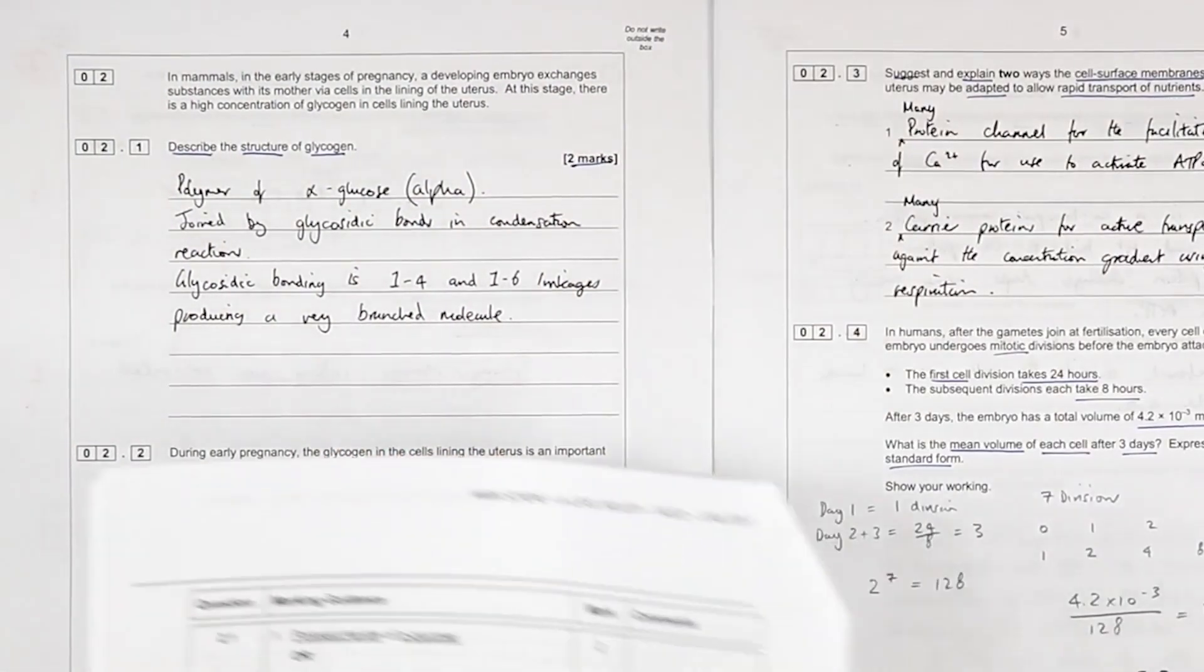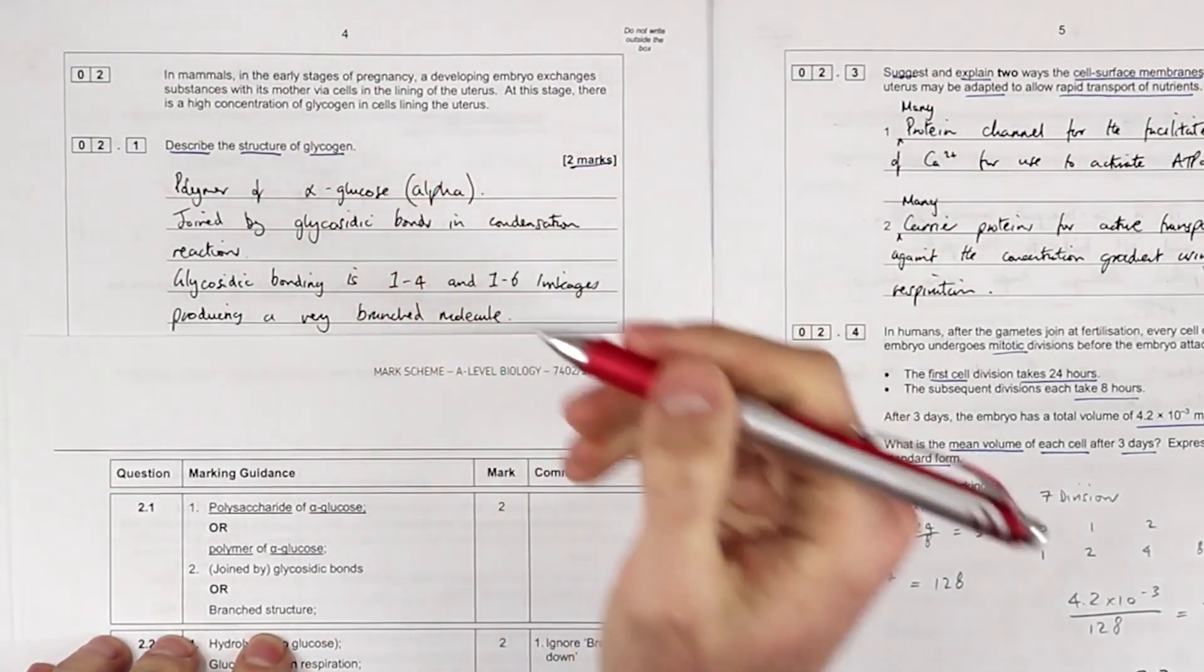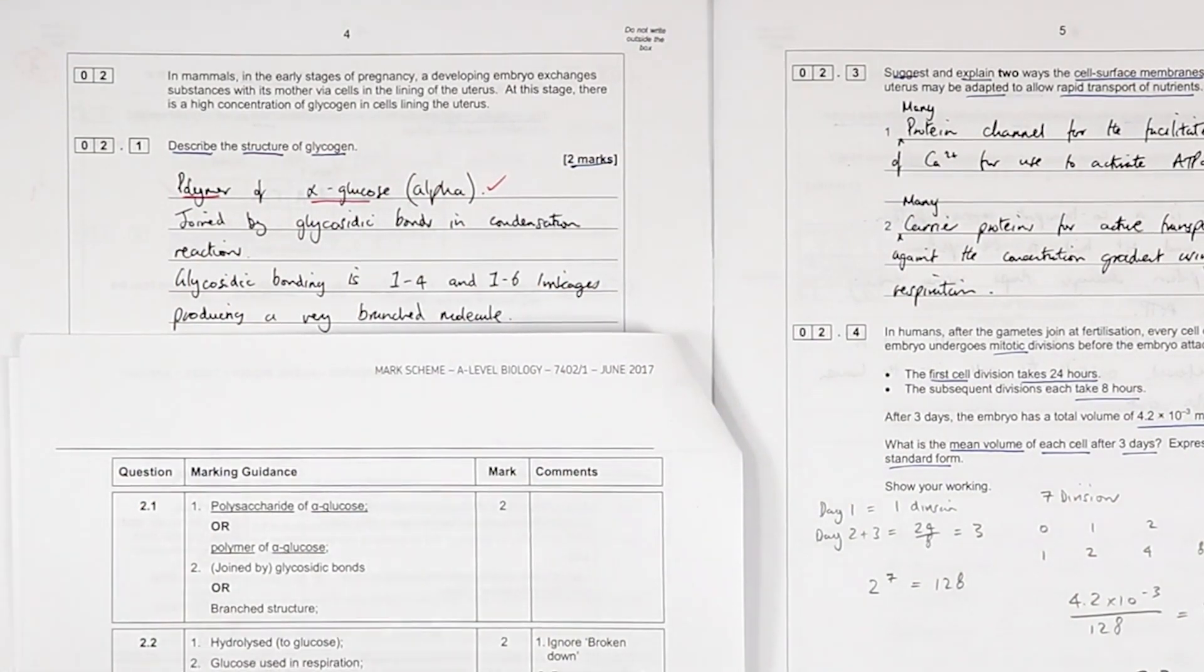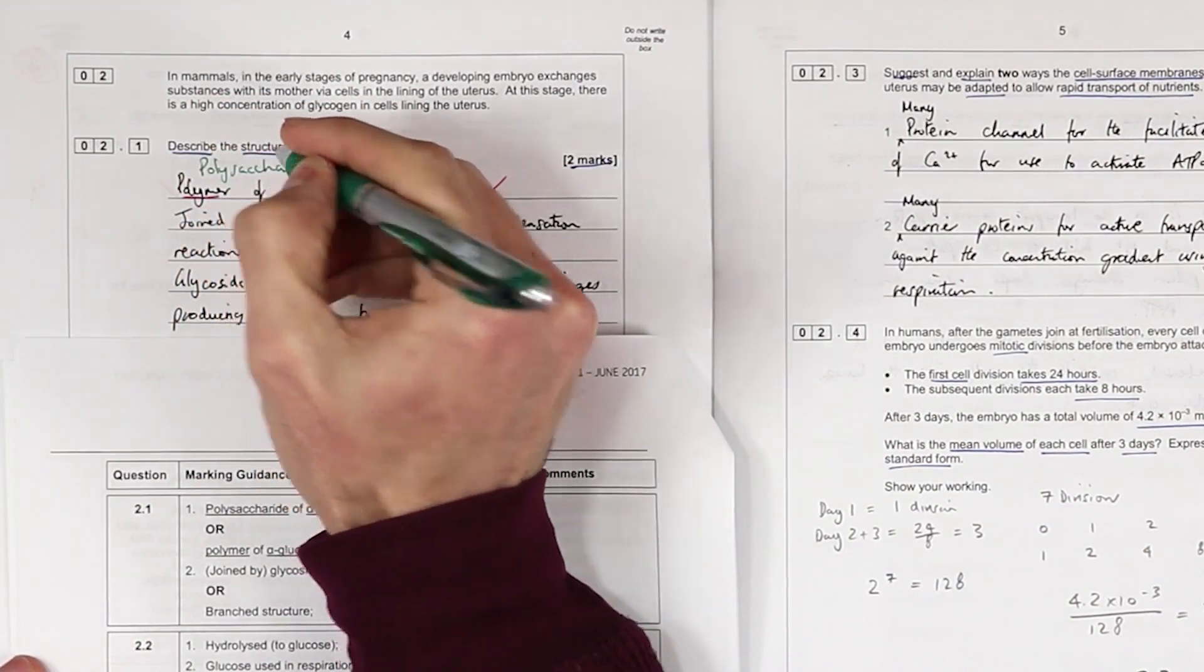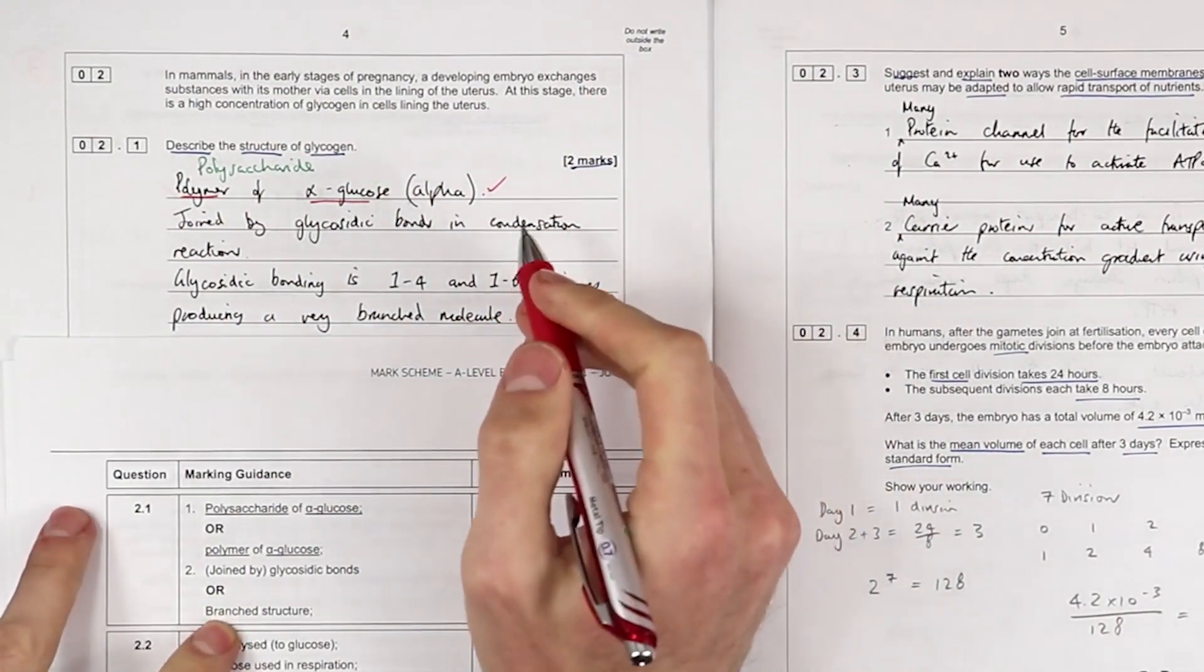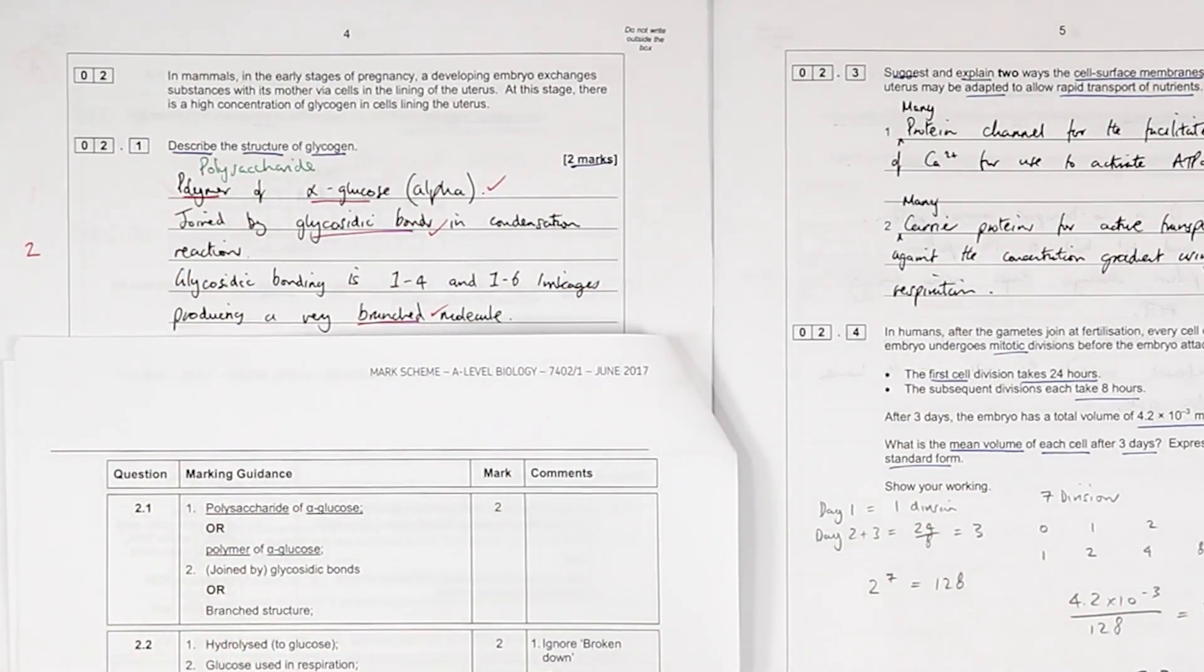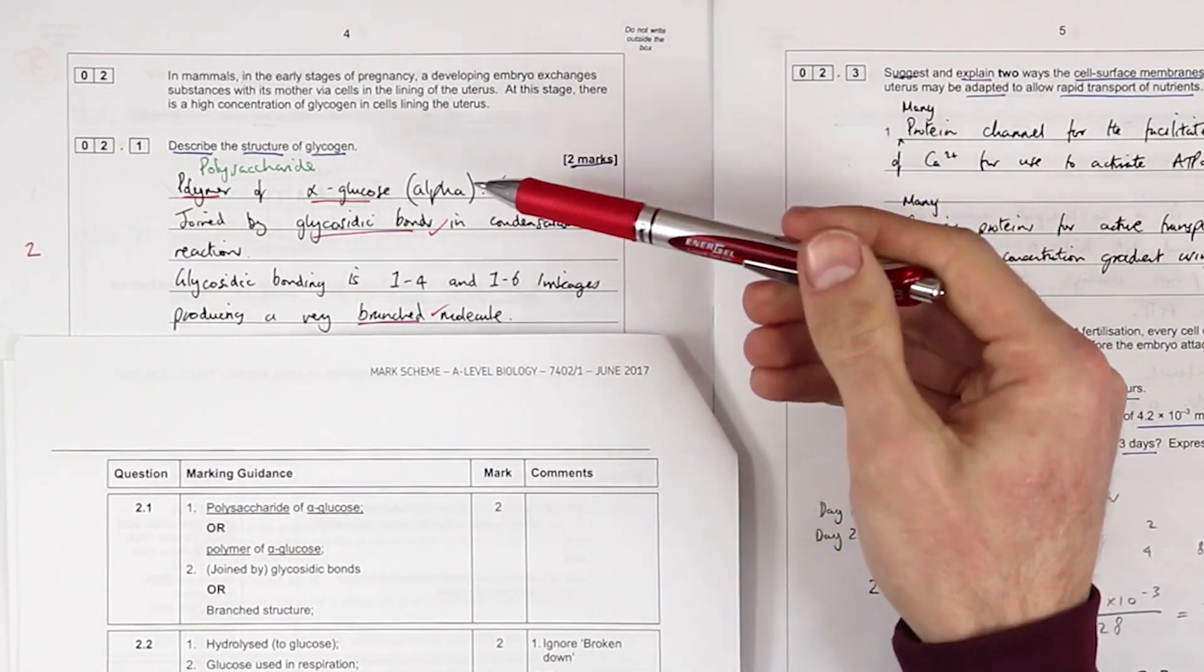Okay, I think it's going to be easier for you to see if we zoom in a bit more. Polysaccharide, polymer, alpha glucose—okay, I'm going to add that in next time, maybe they're going to be more specific. But we get the mark. Joined by glycosidic bonds and branched structure—so we've got glycosidic bonds gets a mark and we got branched, but there's only a maximum of two. Pretty happy with that, pretty straightforward question.